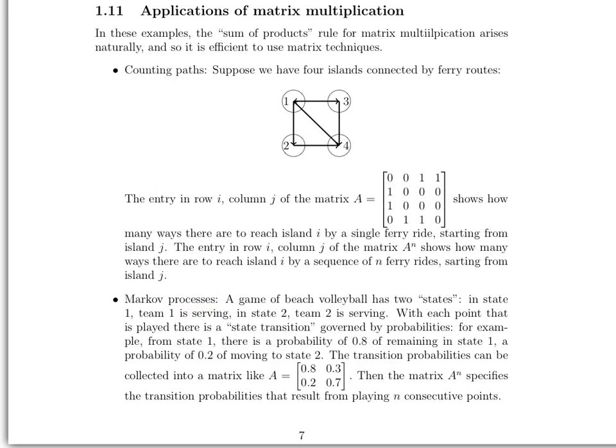Here's an example: we have a game of beach volleyball with two states. State one is team one is serving, and state two is team two is serving. With each point that is played, there is a state transition governed by probabilities. If team one is serving, then in the next serve, either team one could still be serving or team two could be serving because team one lost the ball — that depends on how good team one is. From state one, there's a probability of 0.8 of remaining in state one, meaning an 80% chance that team one will be serving the next point.